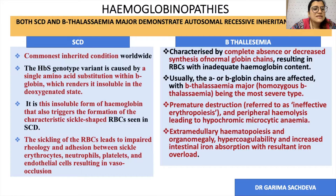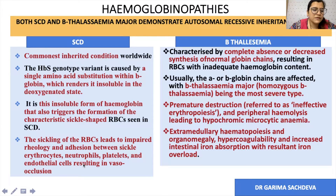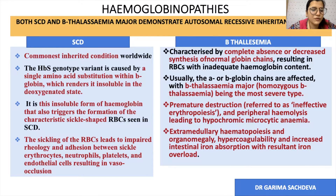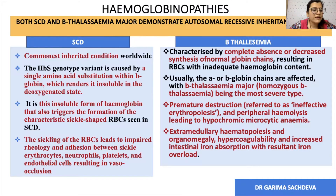The RBCs which demonstrate this mutation are very sticky. They undergo adhesion between other RBCs and other cells like neutrophils, platelets, and endothelial cells, forming a clot that occludes the vessels, causing vascular occlusion.